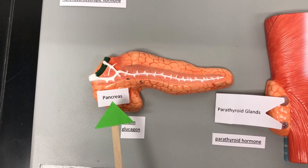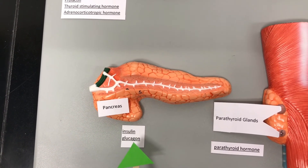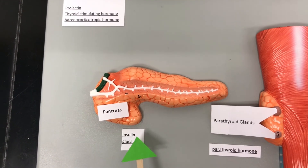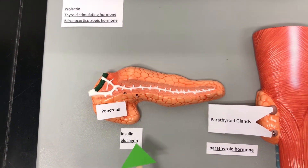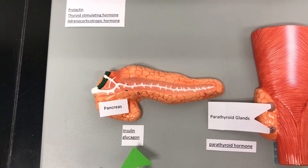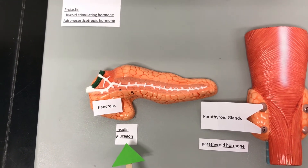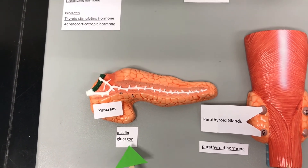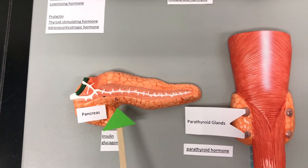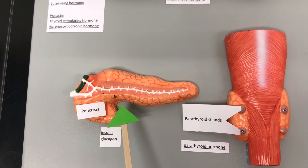The endocrine part secretes insulin, which decreases blood sugar, and glucagon, which increases blood glucose levels. Those hormones are secreted from the islet cells in the pancreas.